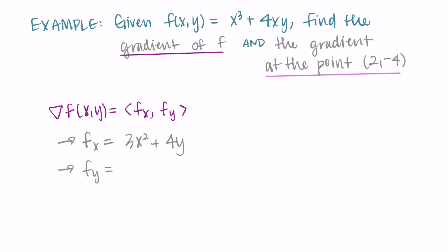For the partial derivative with respect to y: x³ is a constant, so its derivative is 0, and for 4xy, 4x is the constant, leaving just 4x. Now assembling the gradient vector, the first component is 3x² + 4y and the second component is 4x. The first component represents the rate of change in the positive x direction, and the second component represents the rate of change in the positive y direction.